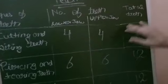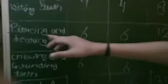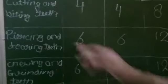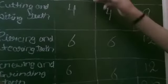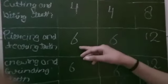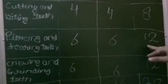Total 8 are there. Piercing and tearing teeth: number of teeth down are 6 and upper also 6, and these are all 12.